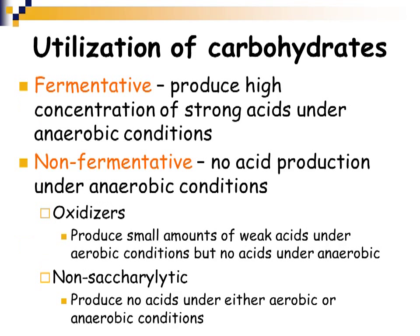For carbohydrate utilization by bacteria: fermentative bacteria produce very high concentrations of acids in an anaerobic environment. Non-fermentative organisms produce no acid anaerobically and fall into two types — oxidizers, which produce small amounts of weak acids under aerobic conditions but no acids anaerobically, and asaccharolytic organisms, which produce no acid at all regardless of whether oxygen is present.